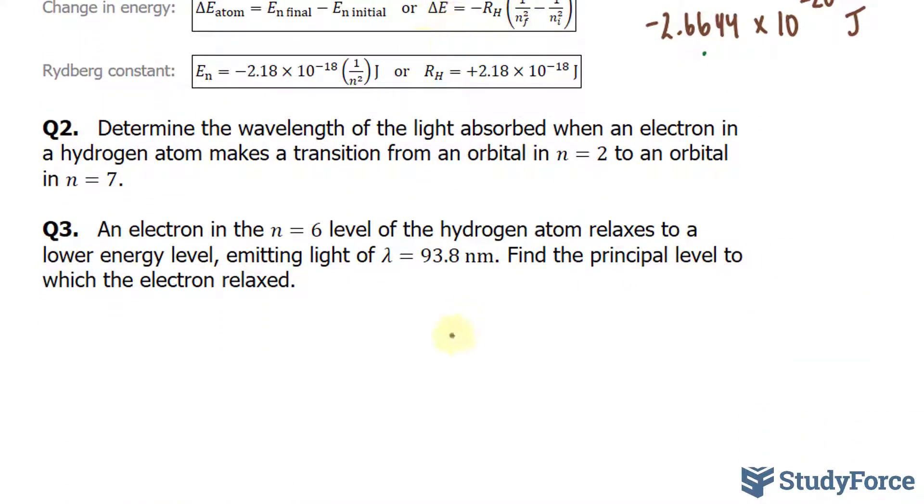Let's use the Rydberg equation. We have delta E equals negative 2.18 times 10 to the power of negative 18, 1 over n, and our n value, our final n value is 7.